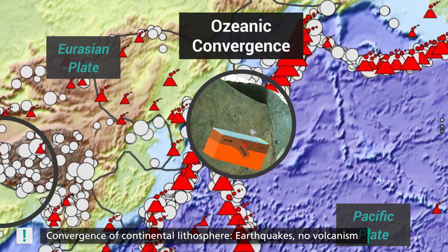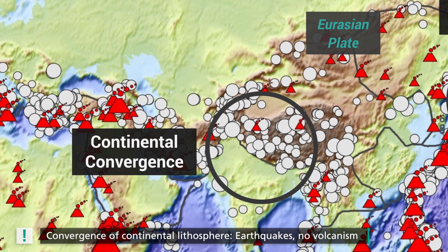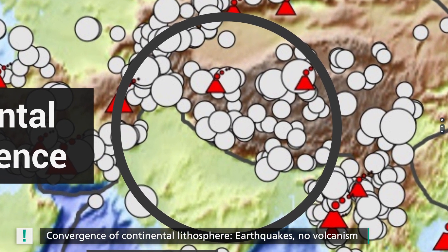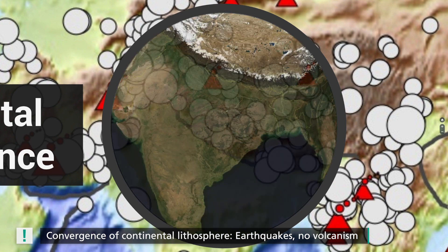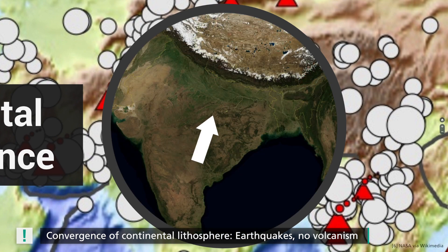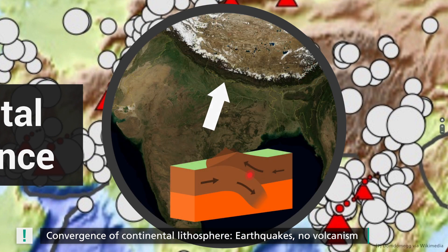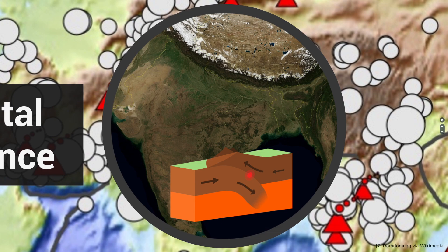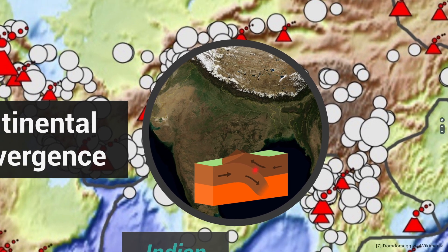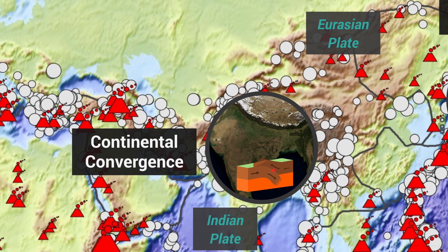In the second case, a continental plate collides with another continental plate. This results in the formation of a mountain range. A prime example of this are the Himalayas, which continue to increase in height due to the movement of the Indian subcontinent. Volcanism does not occur with this type of plate boundary.